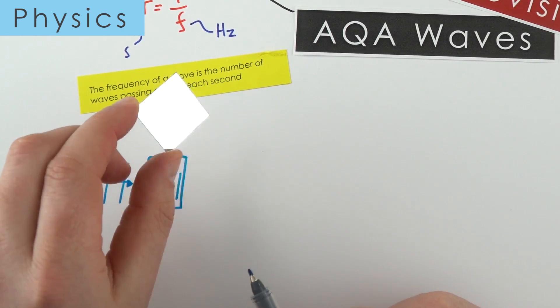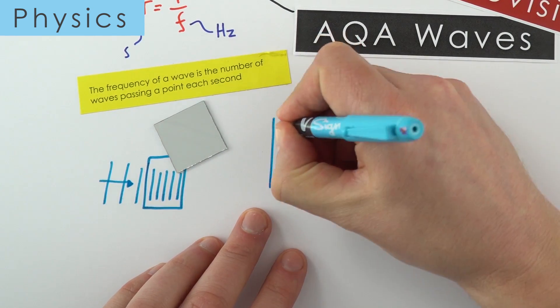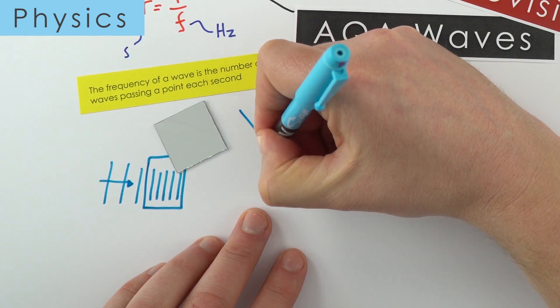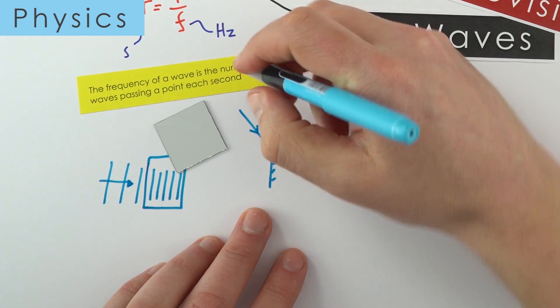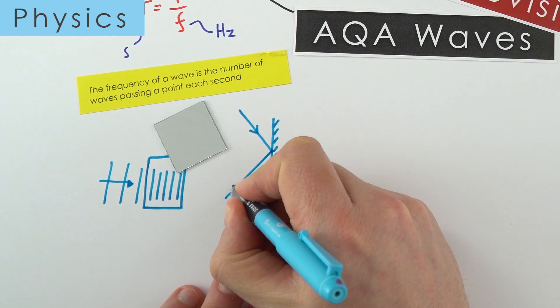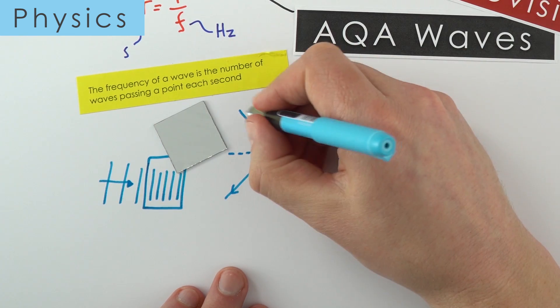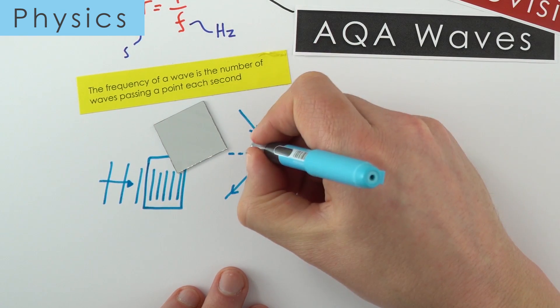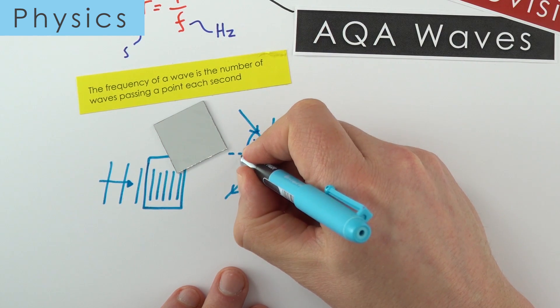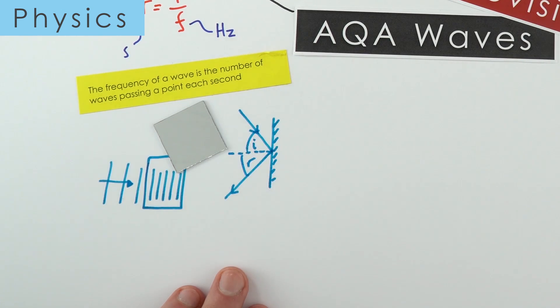If we think about reflected light with a mirror, we can draw our rays of light showing the direction that wave is travelling. The line at 90 degrees to the surface is called the normal. If we're thinking about a ray of light, this would be the incident ray with the angle of incidence. This is the reflected ray, so that's the angle of reflection. These are always measured between the ray of the wave or the light and the normal.